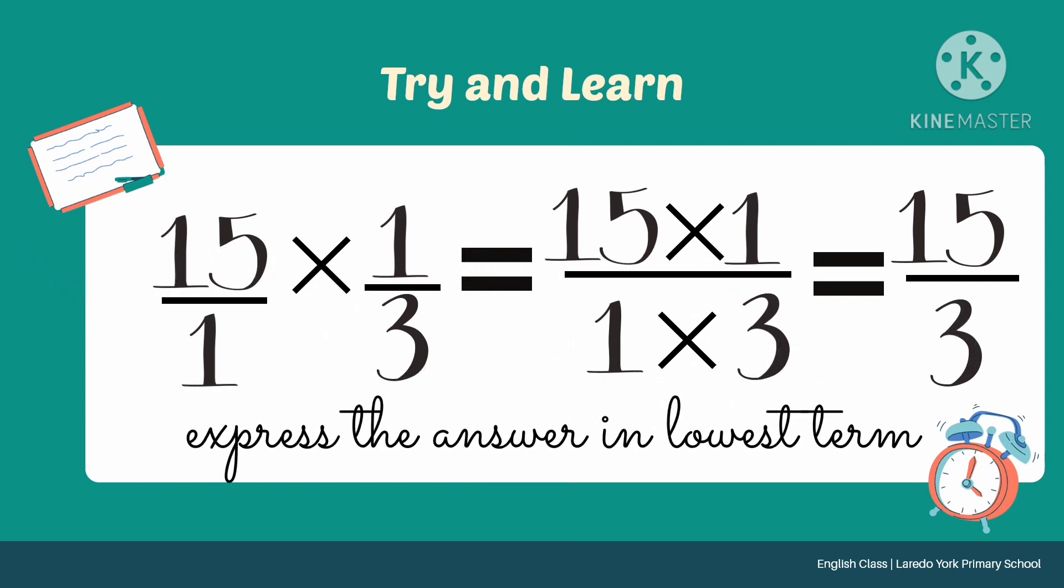The last step is express the answer in lowest term if possible. Since ang 15 over 3 ay pwede pa siyang i-lowest term, we will get the GCF to simplify 15 over 3.